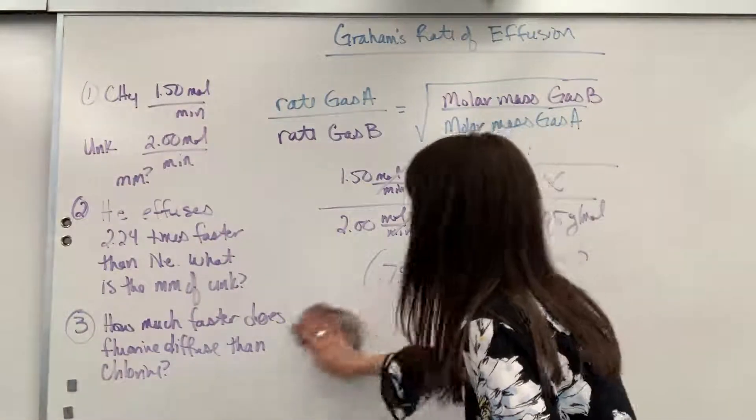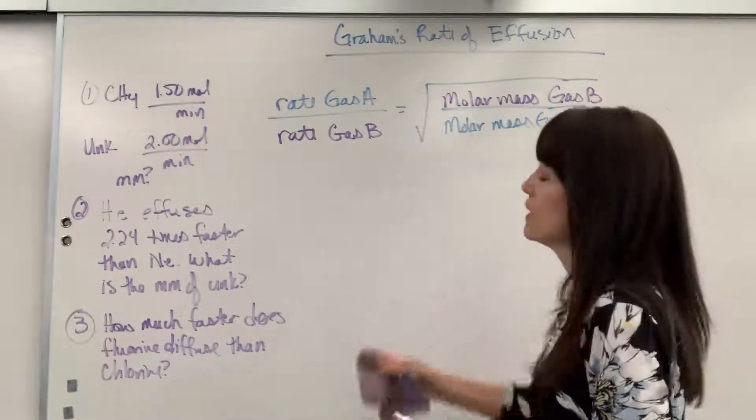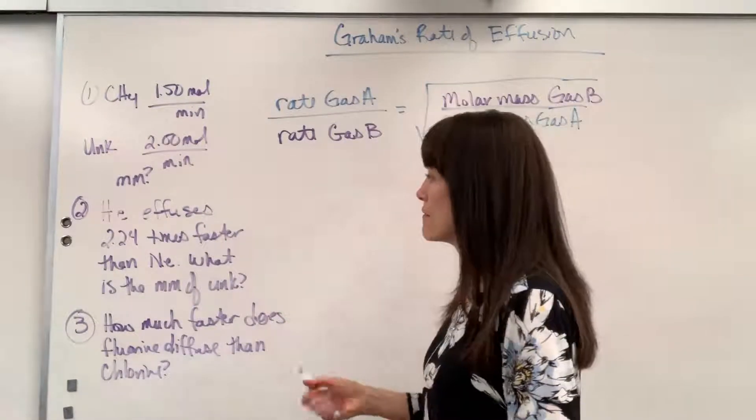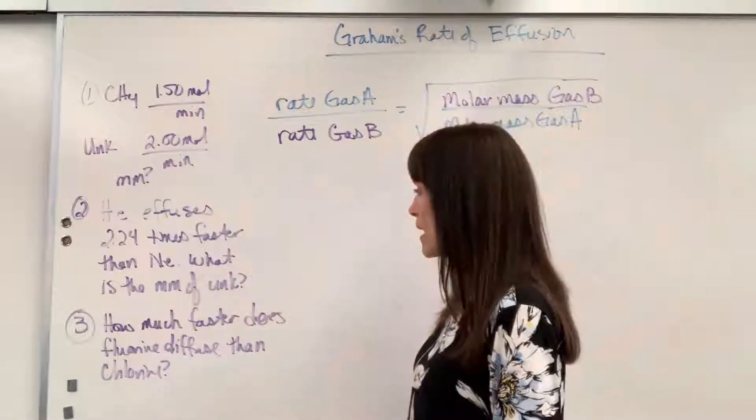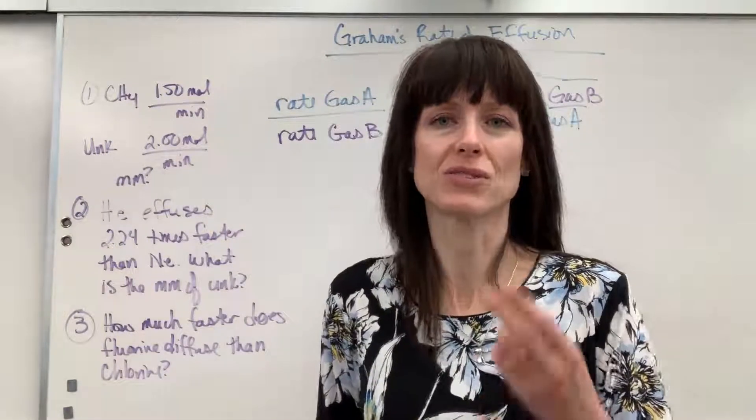Second example that you could be asked, look how this is framed. It says, helium effuses 2.24 times faster than neon. What is the molar mass of the unknown? So, what's different about this is that they're not giving us two rates.